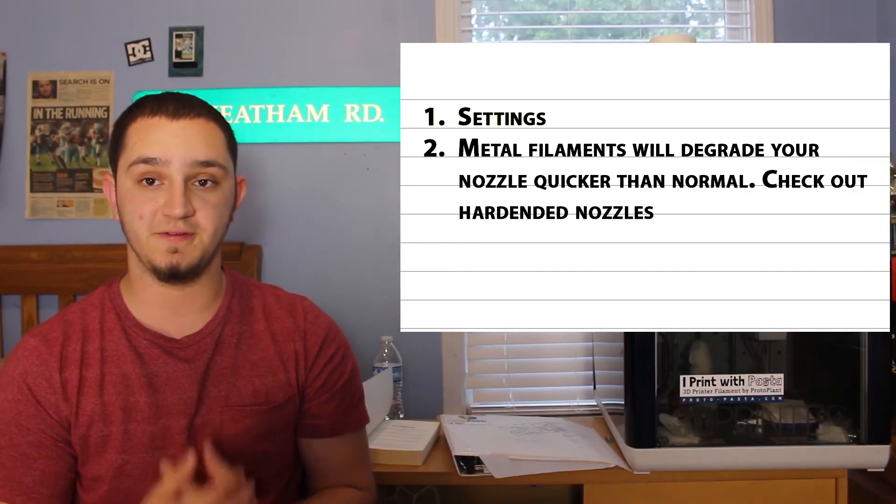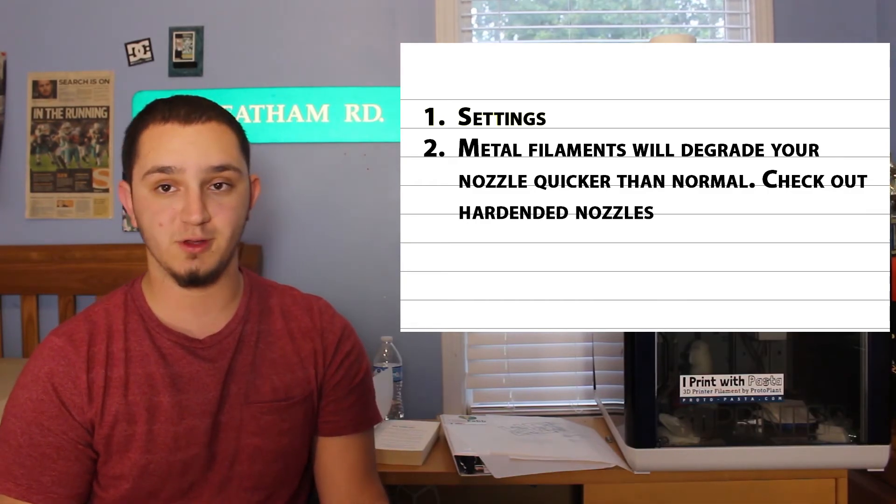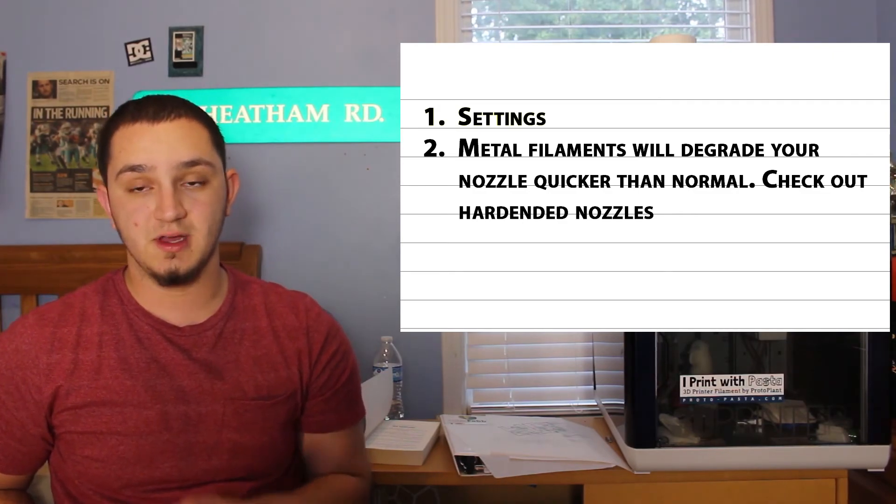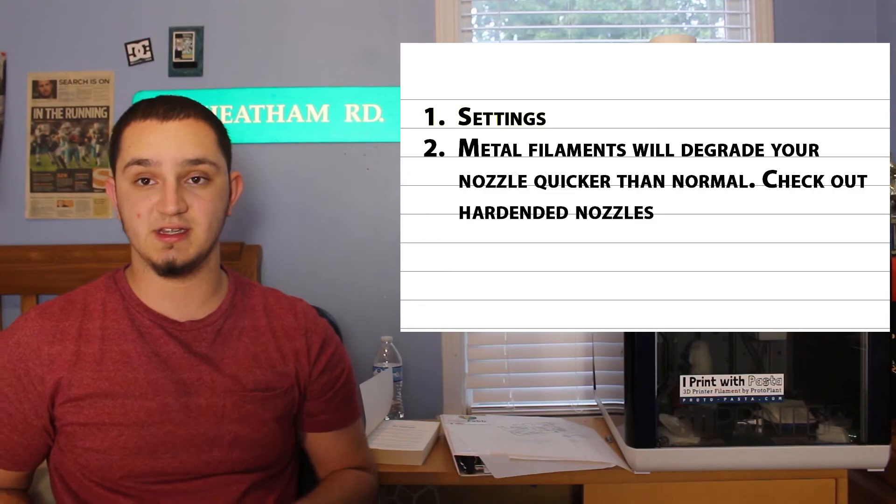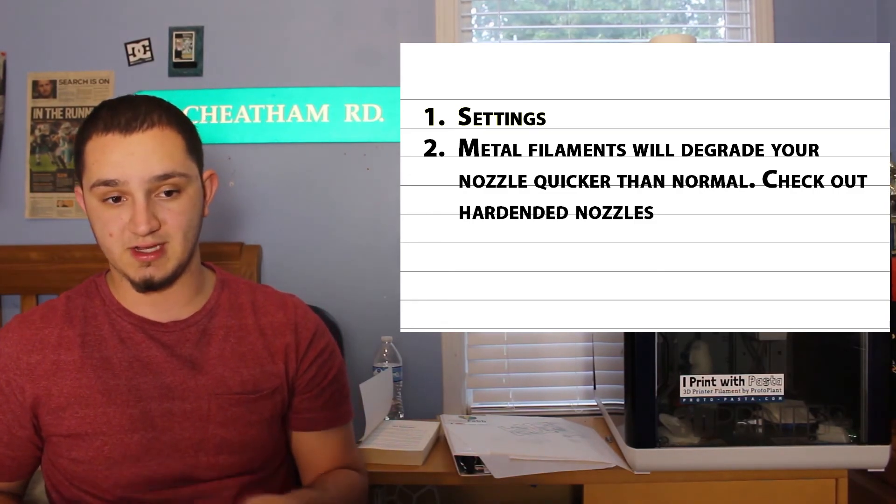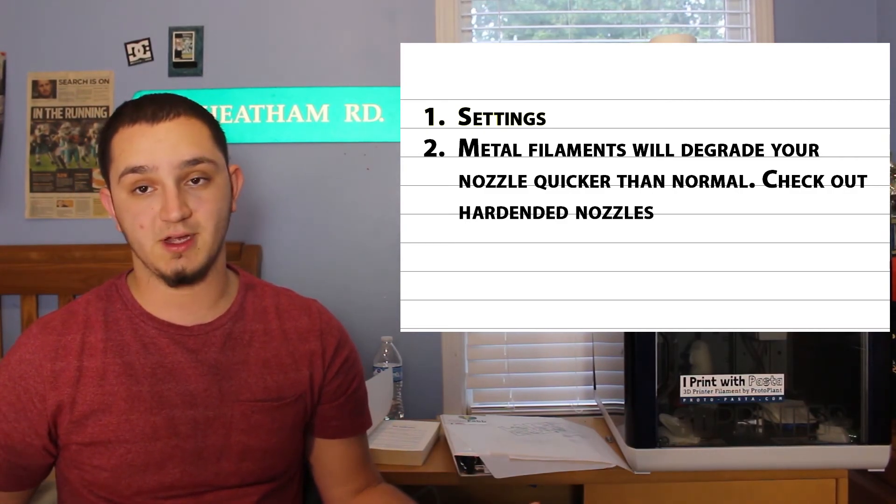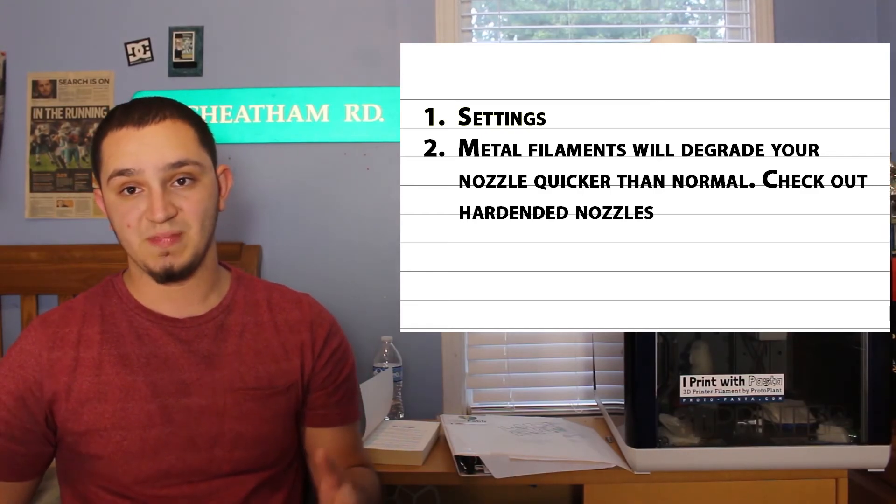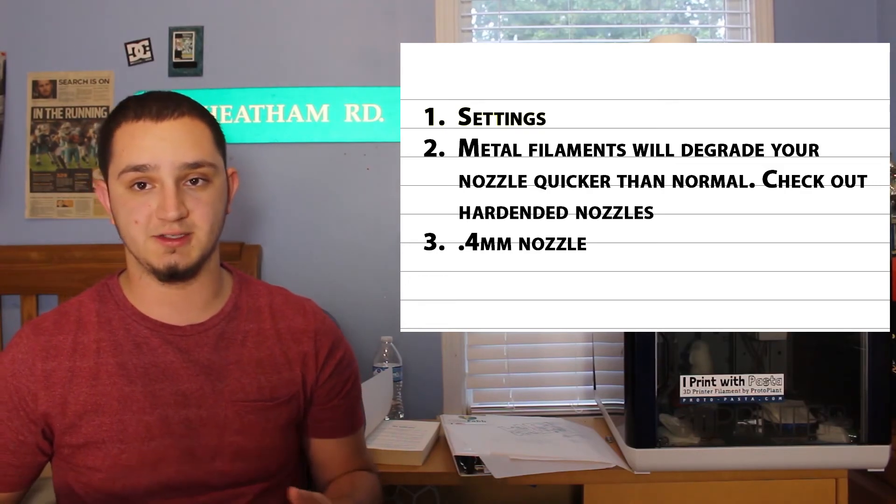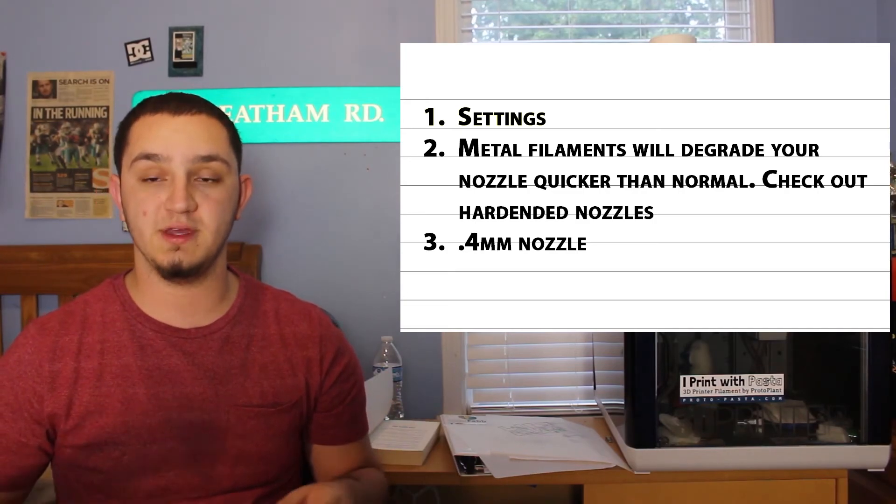Second, you want to make sure you take into account the abrasiveness of the filament. It is a metal composite and not a pure plastic filament, so it will degrade your hot end nozzle faster than your standard plastics—your PLAs and your ABSs. That's something to definitely keep in mind. If you have a changeable nozzle, maybe get a hardened nozzle instead of the standard brass. Different companies sell them in different sizes.